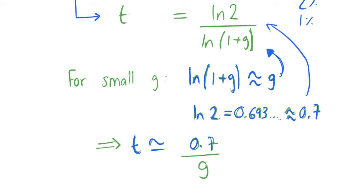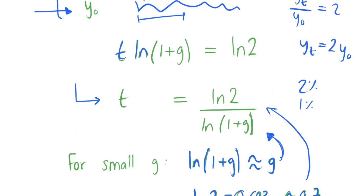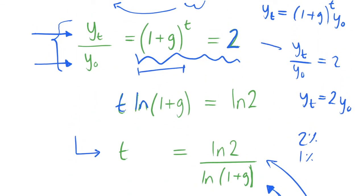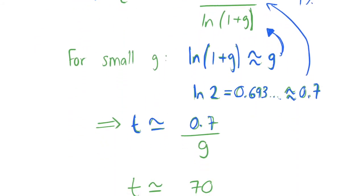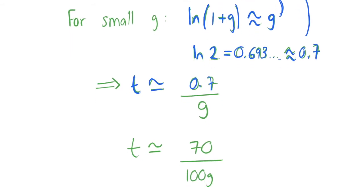This t here is going to be the time at which our variable doubles in value, as we've assumed up here that we've set this equal to 2. If we wanted to know when it would triple in value or quadruple, we would put a 3 or a 4 here, but the t we're looking for here is going to be when these values double.